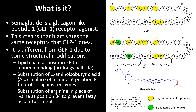Second, at position 8, the amino acid alanine was replaced with something called alpha-aminoisobutyric acid to protect the drug against destruction by enzymes. Third, the amino acid arginine was substituted for lysine at position 34 to prevent the lipid modification from attaching to this site, because they didn't want a duplication of this group on another amino acid.